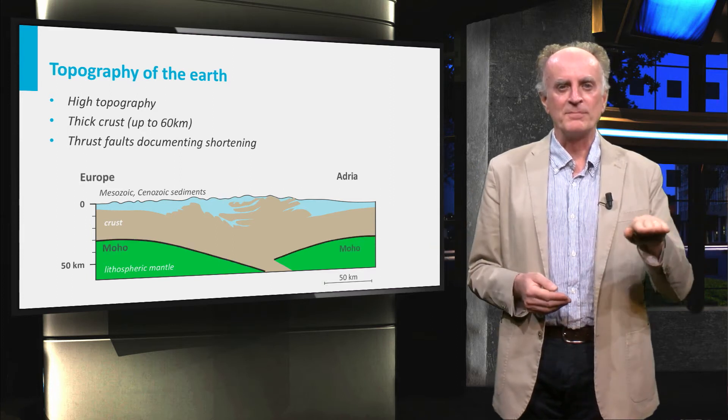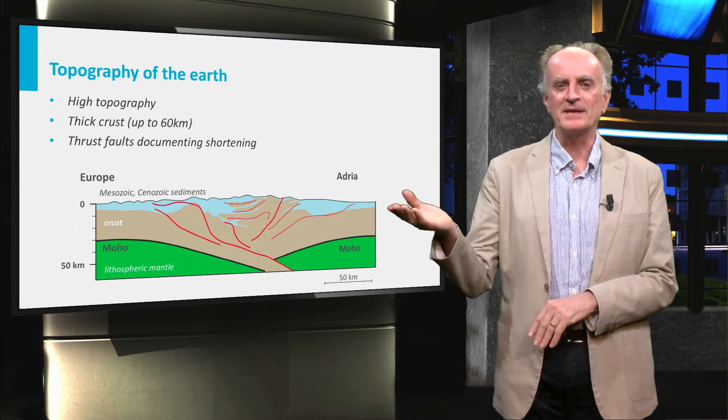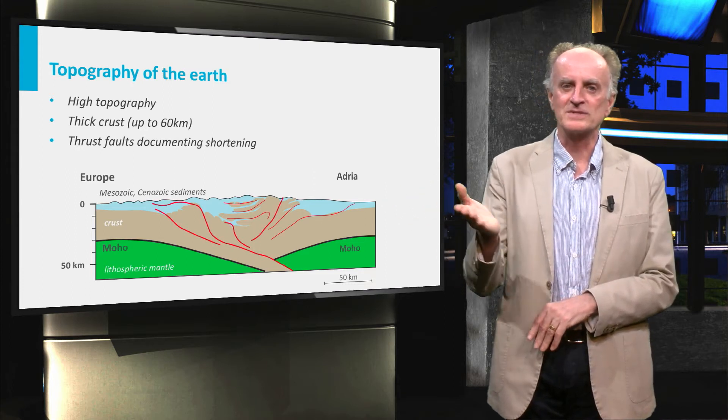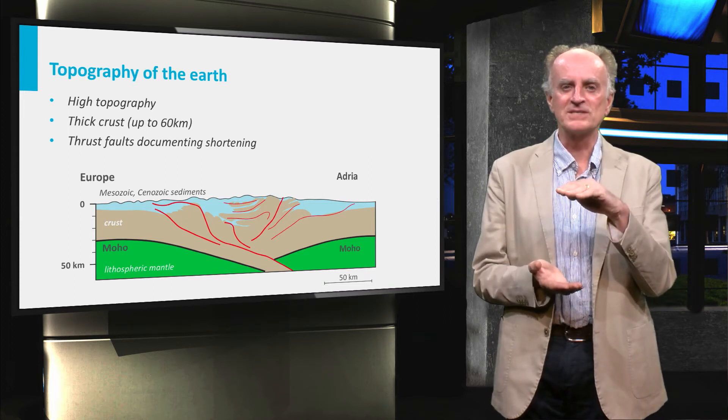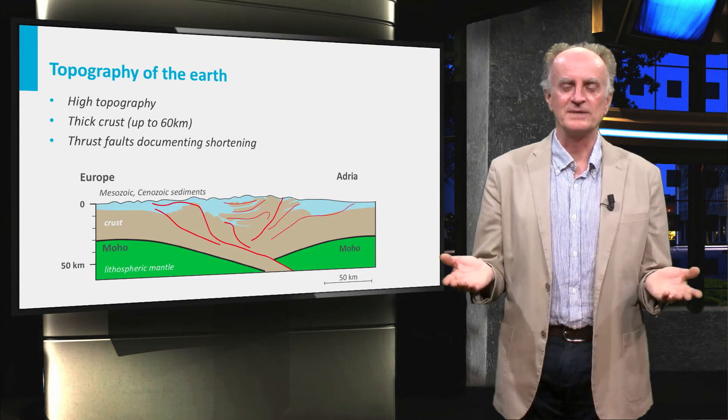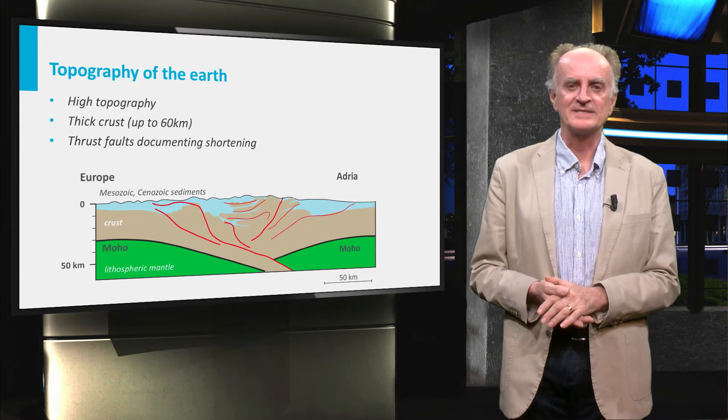The moho of the European plate deepens towards the south. The moho of the Adriatic plate, on the contrary, deepens towards the north. As a result, the crust underneath the Alps is much thicker than in the surrounding regions. A thick crust is one of the main characteristics of mountain belts.